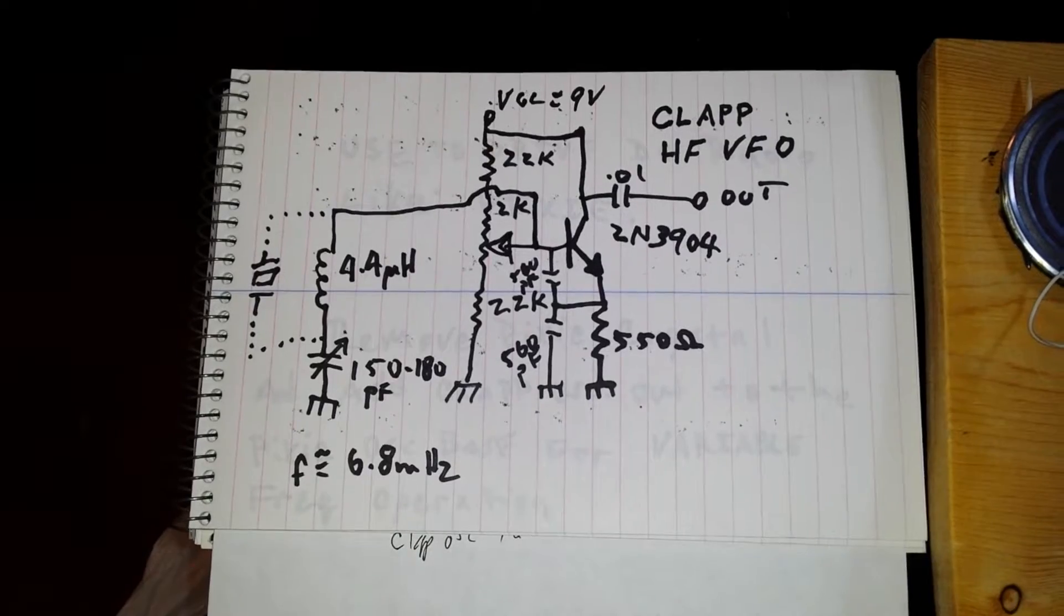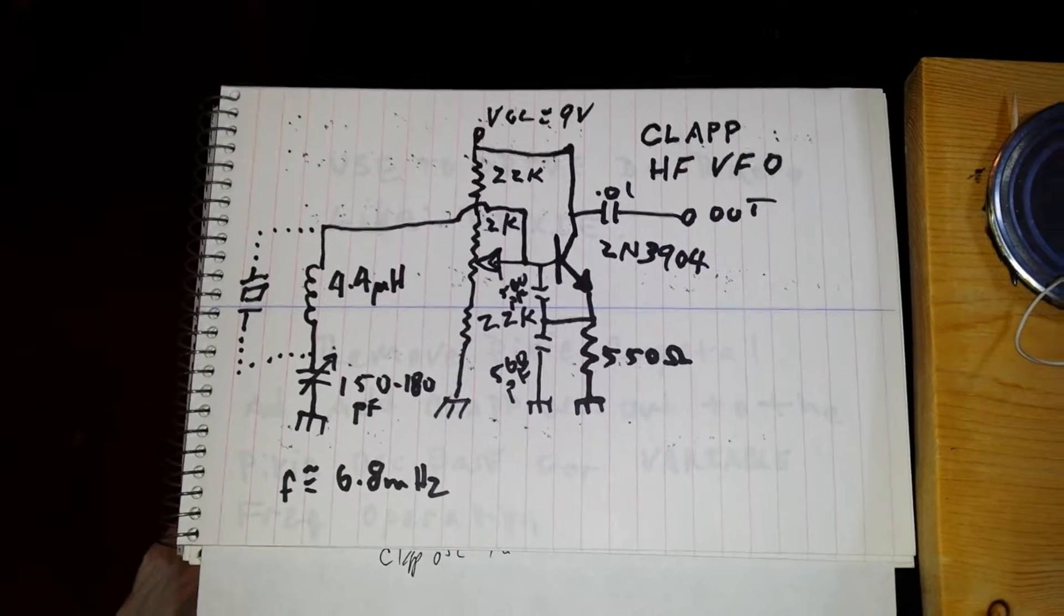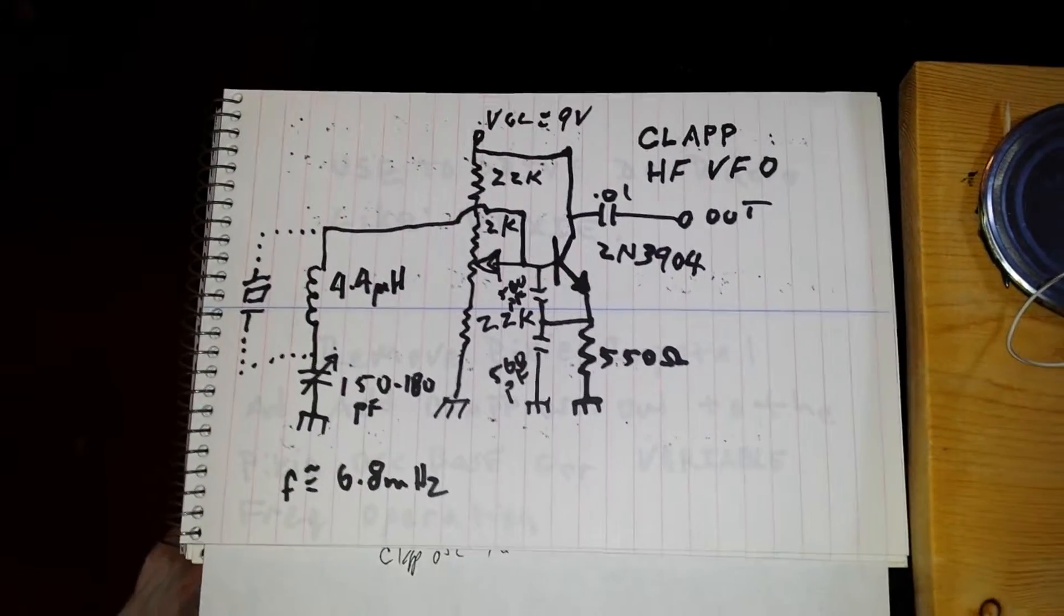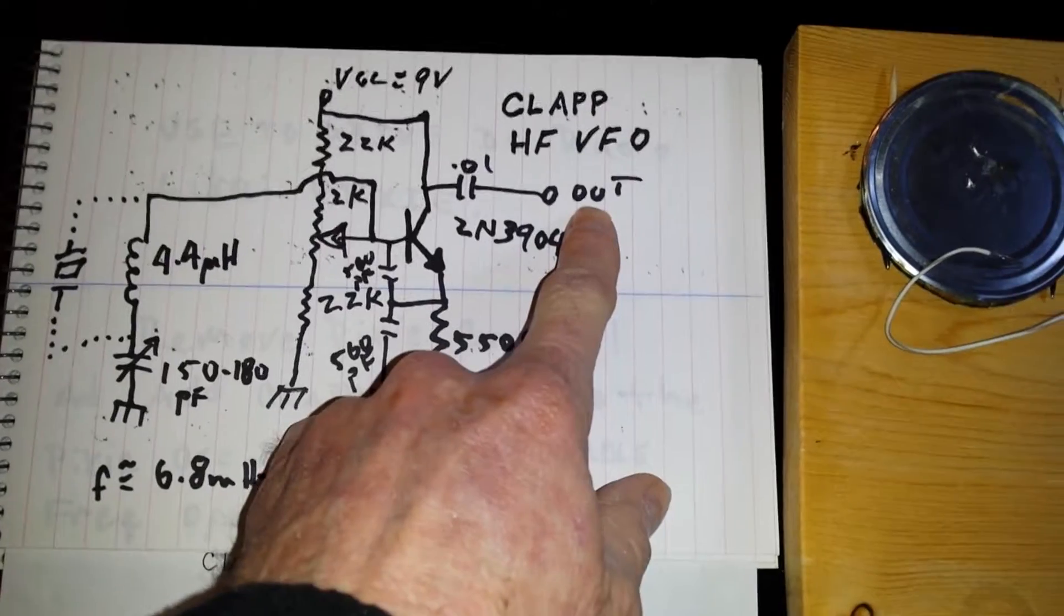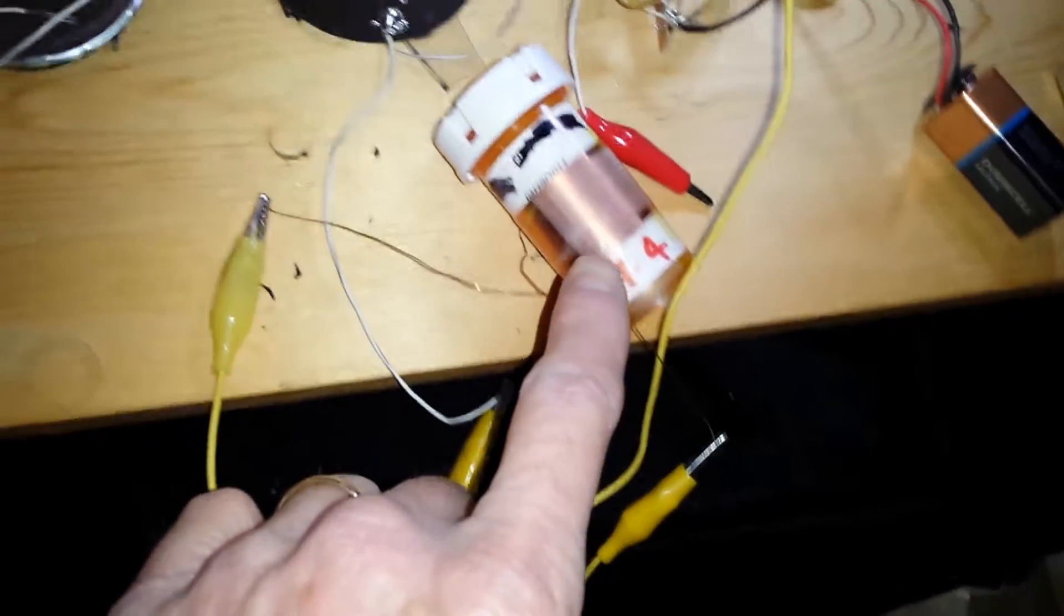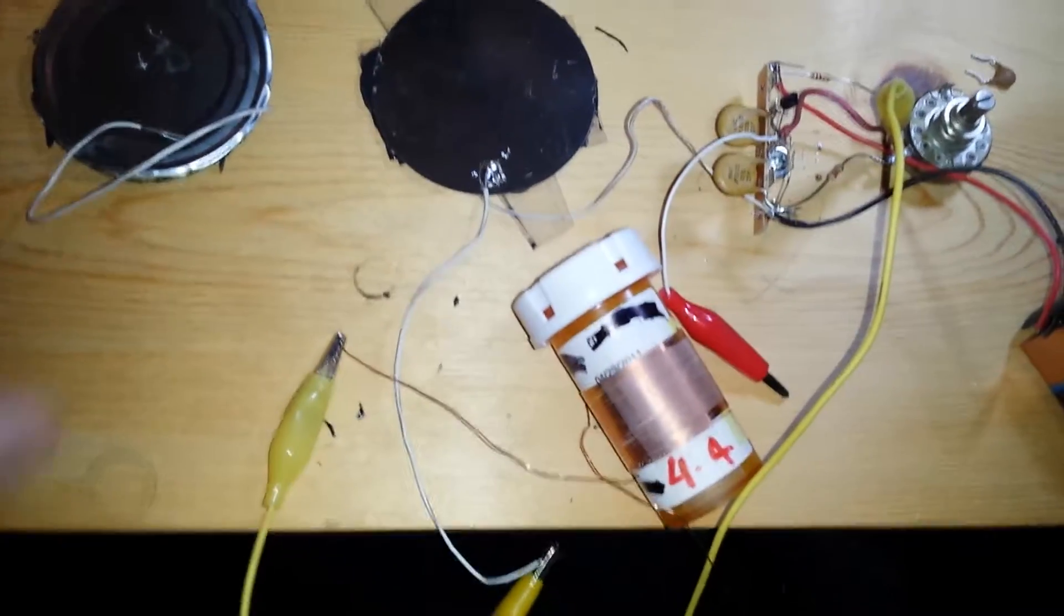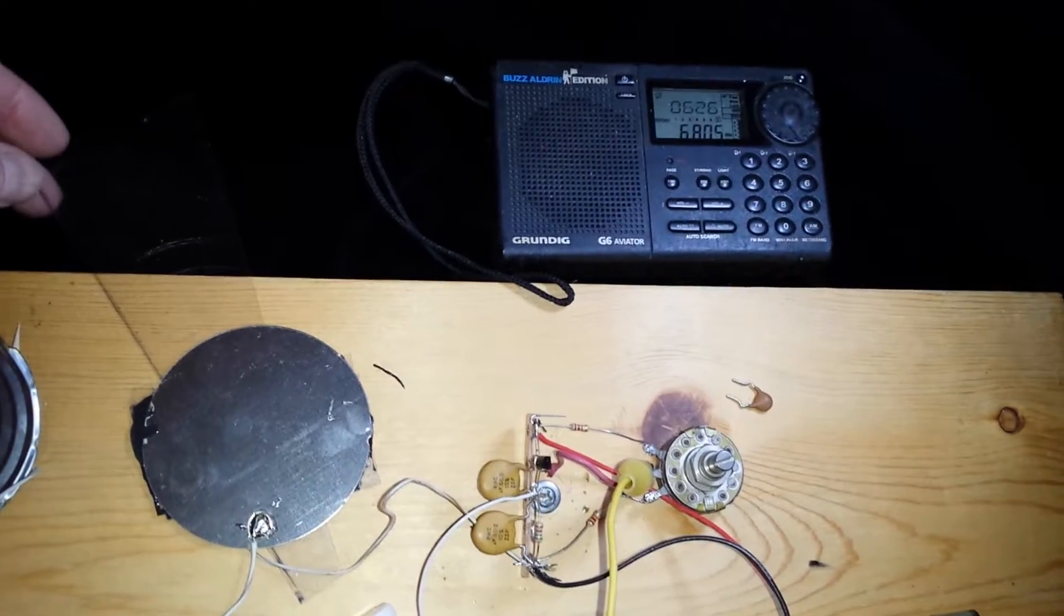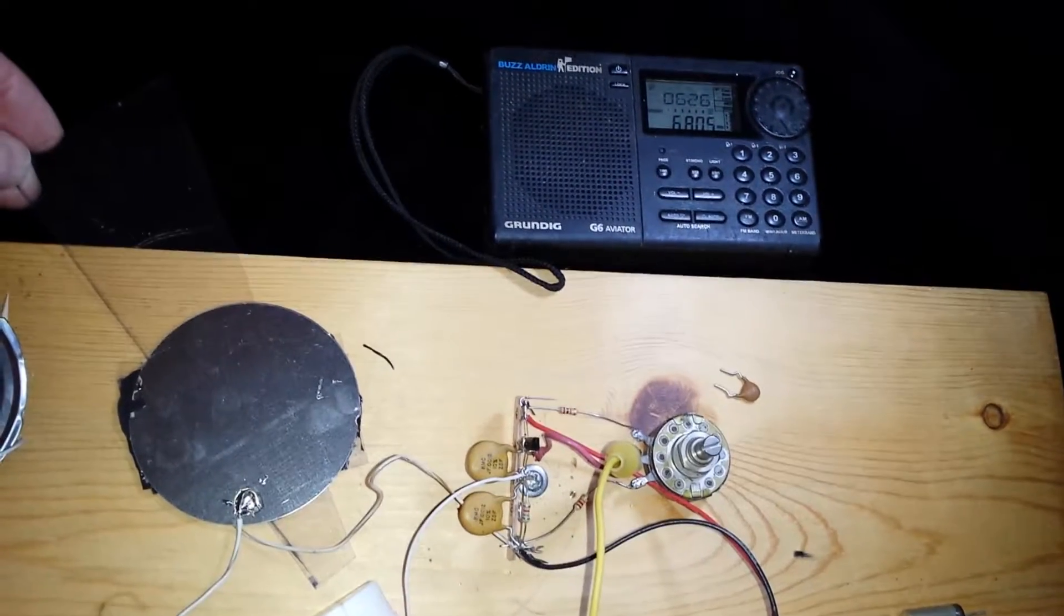It can be used as a transmitter alone or to adjust the frequency coverage of a direct conversion receiver like a Pixie by simply removing the crystal from the Pixie and putting the output here into where the crystal used to be on the Pixie's base. Using a 4.4 micro-henry hand-wound coil, we get a signal at about 6.8. You're at zero-beat there.